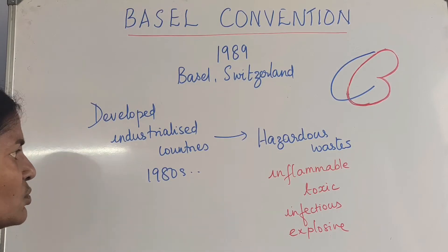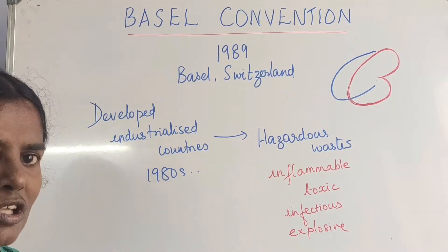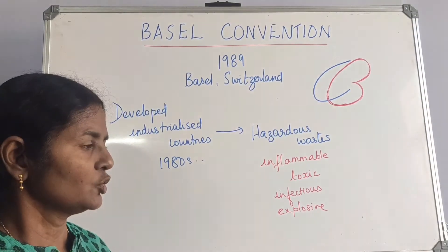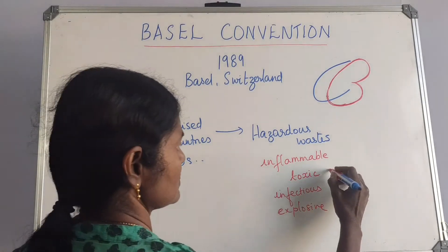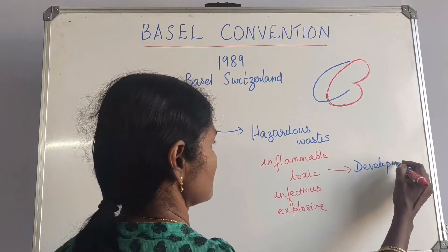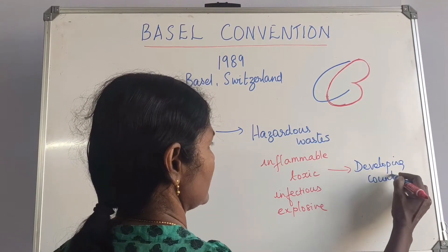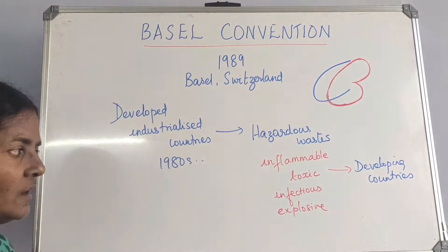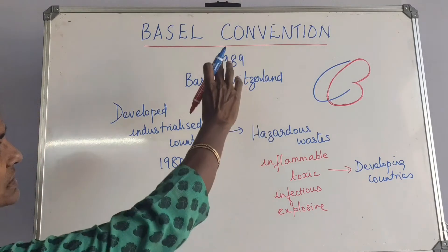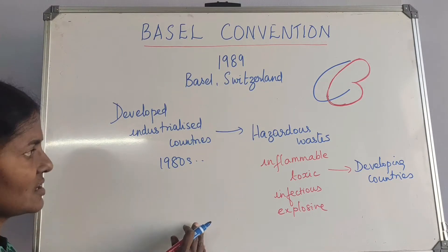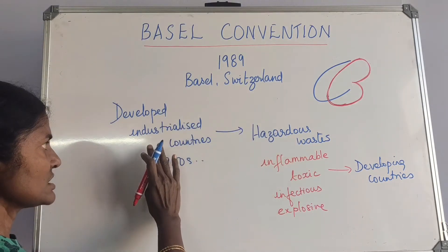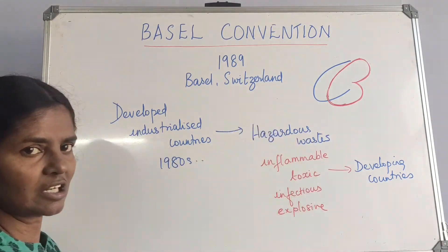What happened was they found it very difficult to dispose of this waste, so they slowly started sending it away — or selling it rather — to developing countries. This went to the developing countries or underdeveloped countries of Africa, Asia, and so on. So there was a trans-boundary movement. The Basel Convention is basically against the trans-boundary movement of hazardous waste from industrialized developed countries to developing countries.